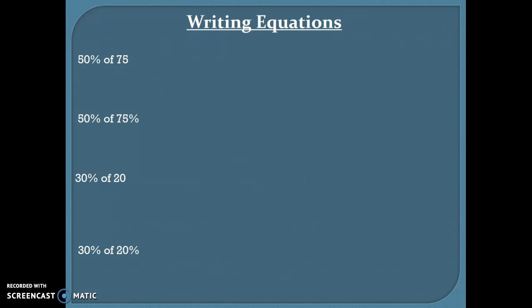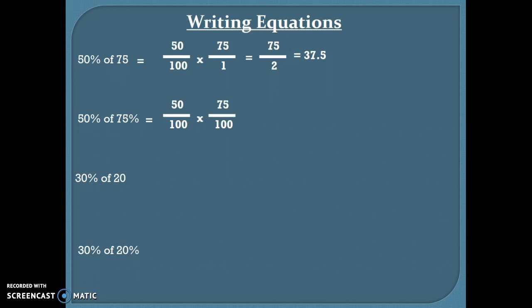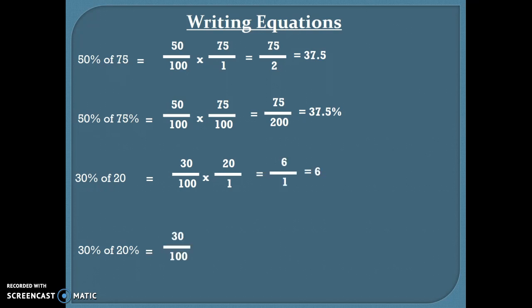Notice that on this first one you're finding 50% of 75, so you're going to set it up like that. Hopefully you got 37.5. Now this next one is 50% of 75%, so you need to set it up correctly — and if you solved it, you would have gotten 37.5%. Here we have 30% of 20, and we get the number six. Now we're finding 30% of 20%, and we get 6%. Okay, we are ready for some word problems.